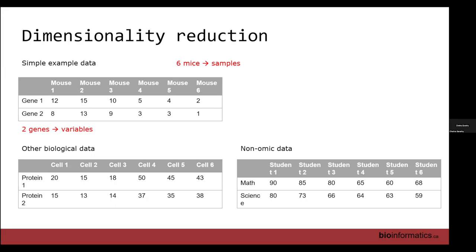Other examples of biological data would be protein expression in different cell lines. Or outside of omics, scores of students in different subjects like math and science. In the protein example, the proteins are your variables and the cell lines are your samples. For the student example, the subjects — math and science — are the variables, and the students are your samples.